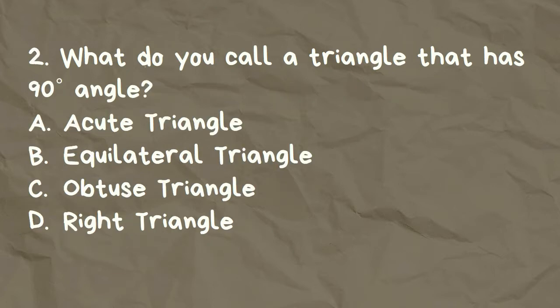What do you call a triangle that has a 90 degrees angle? A. Acute triangle, B. Equilateral triangle, C. Obtuse triangle, D. Right triangle.